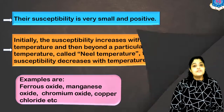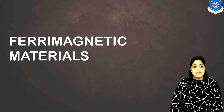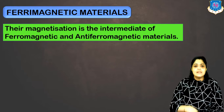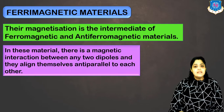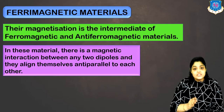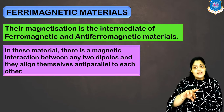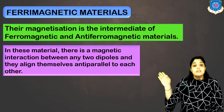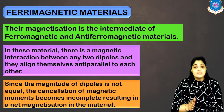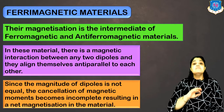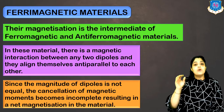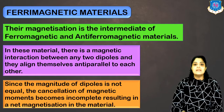Now let's discuss the fifth type — ferrimagnetic materials. Their magnetization lies somewhere between ferro and anti-ferromagnetic materials. These are materials in which there is a magnetic interaction between adjacent dipoles and the dipoles align themselves anti-parallel to each other. But the magnitude of the adjacent dipoles is not the same. Because the magnitudes are unequal, the cancellation of magnetic moments becomes non-uniform, leading to some net dipole moment or net magnetization.